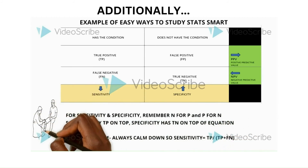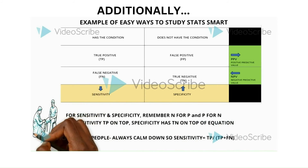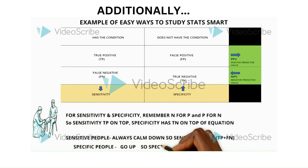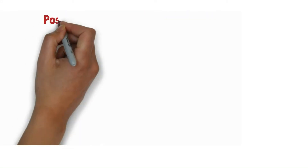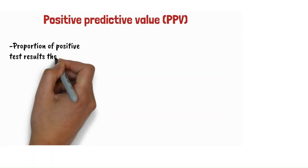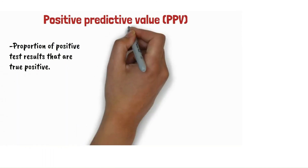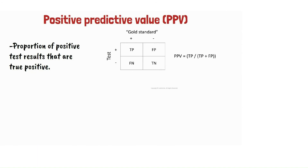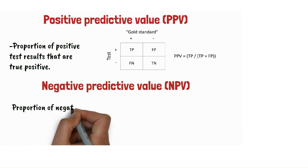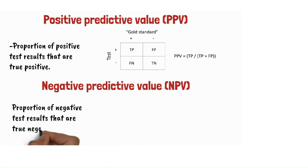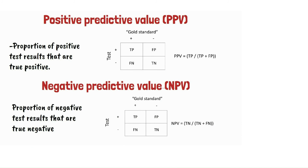For sensitivity, the formula is: true positives divided by (true positives plus false negatives). Specific people are proud and go up — so for specificity, we move upwards to: true negatives divided by (true negatives plus false positives). Positive predictive value (PPV) is the proportion of positive test results that are true positives — the probability that a person actually has the disease given a positive test result. Negative predictive value (NPV) is the proportion of negative test results that are true negatives — the probability that a person is disease-free given a negative test result.